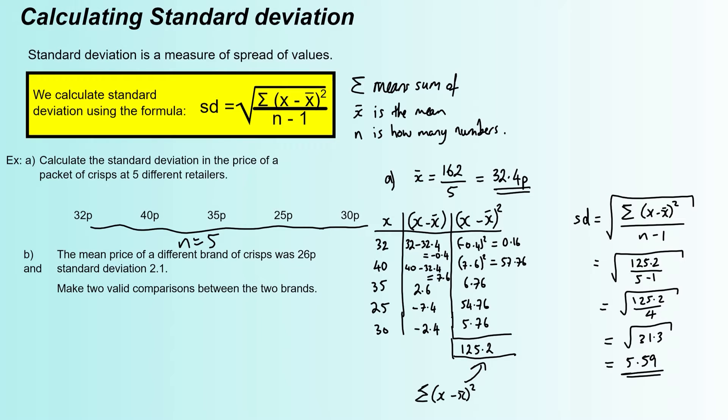Your mean was 32.4. That's going to come into play with part B. So part B says the mean price of a different brand of crisps was 26 pence and standard deviation was 2.1. Make two valid comparisons between the two brands. So we're going to bullet point this. I find that generally makes it easier to keep track of what you're doing.